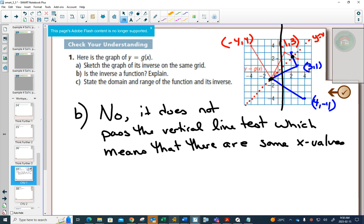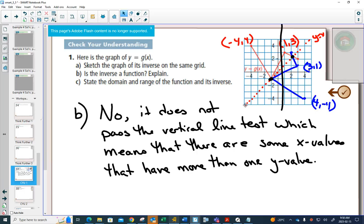If it doesn't pass the vertical line test, that means that there are some x values that have more than one y value, we don't say it's a function.